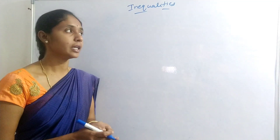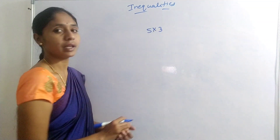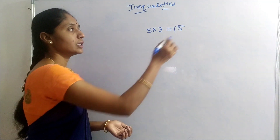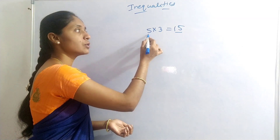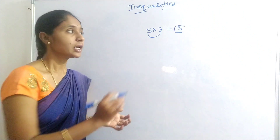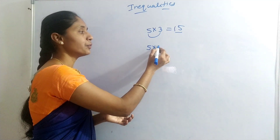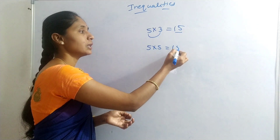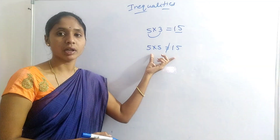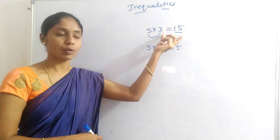Let me explain what an inequality is. If we multiply 5 and 3, the result equals 15. The number 15 equals the product of 5 and 3 — this is an equality. But the product of 5 and 5 is not equal to 15. This is an inequality.